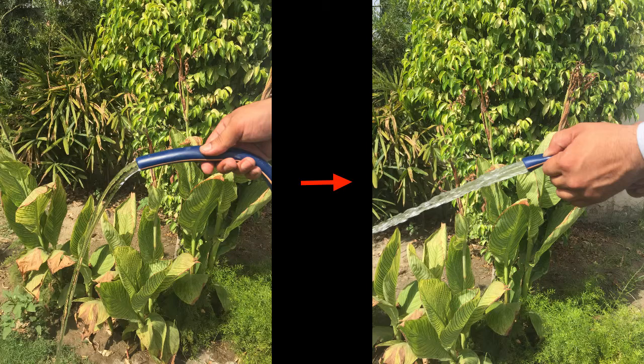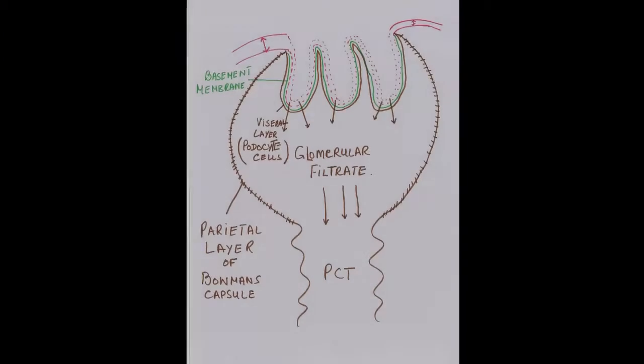As we go further along, the pressure results in the fluid in the capillaries filtering out into the Bowman's capsule. While the fluid was inside the capillaries it was called plasma; now once it's in the Bowman's capsule, it's called glomerular filtrate.